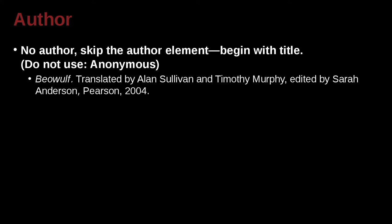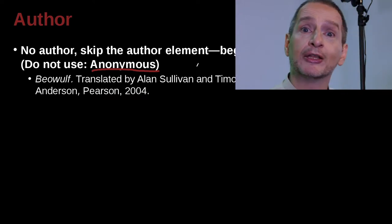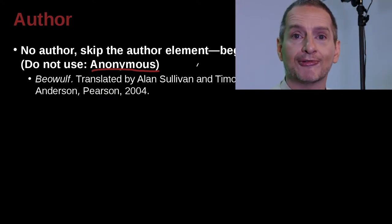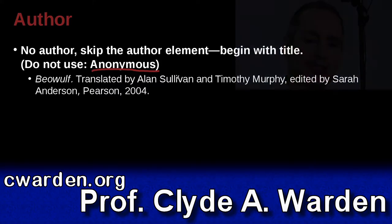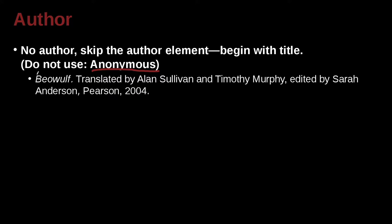What if there really is no author? If we can't find an author, then as we just said, we can skip the author. Here's an example of Beowulf, which is an ancient, famous story, and we don't know who the author is. So what do we do? We just do not write the author's name. Do not write the word 'anonymous.' Anonymous means the author is unknown, but the MLA is very clear — do not write anonymous. Just skip it and begin with the name of the book, paper, movie, or whatever.